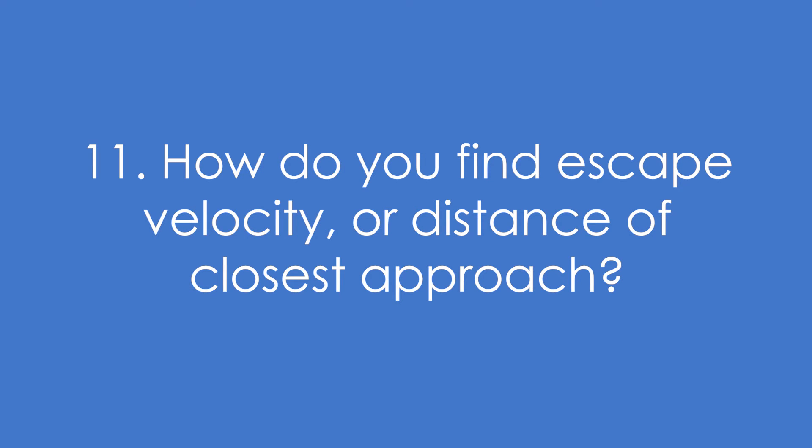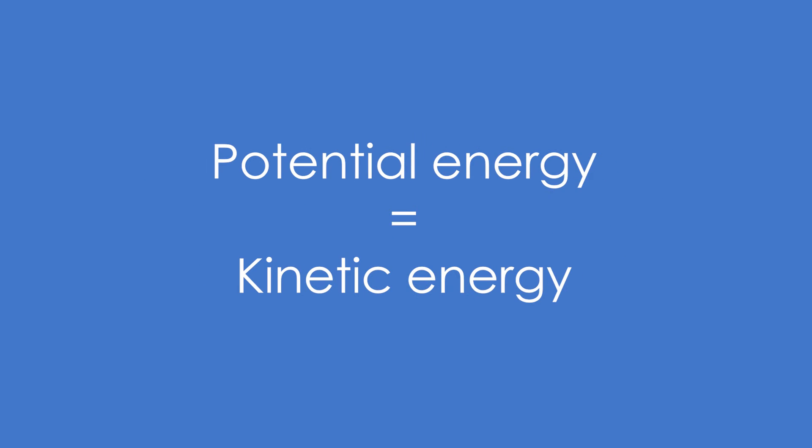Eleven, how do you find escape velocity or distance of closest approach? You just equate potential energy and kinetic energy. GMm over r or kQq over r equals half mv squared.